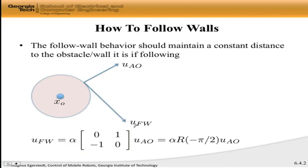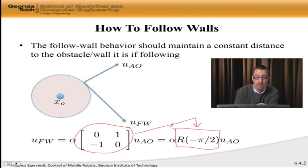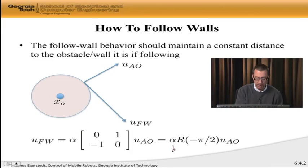Now, I should point out that this matrix here, I can write as a rotation matrix that corresponds to a negative π/2 flip. So I can actually write this as α, which is the scale, times the rotation matrix that is the flip, times u_avoid obstacle, because that is ultimately the behavior that I'm flipping.